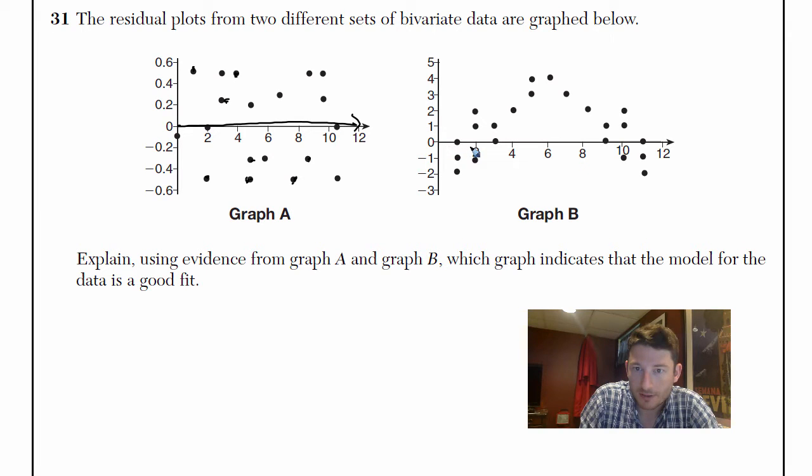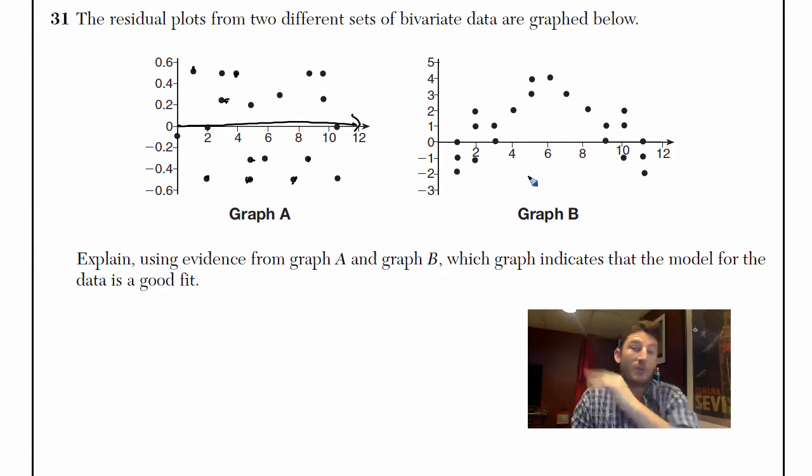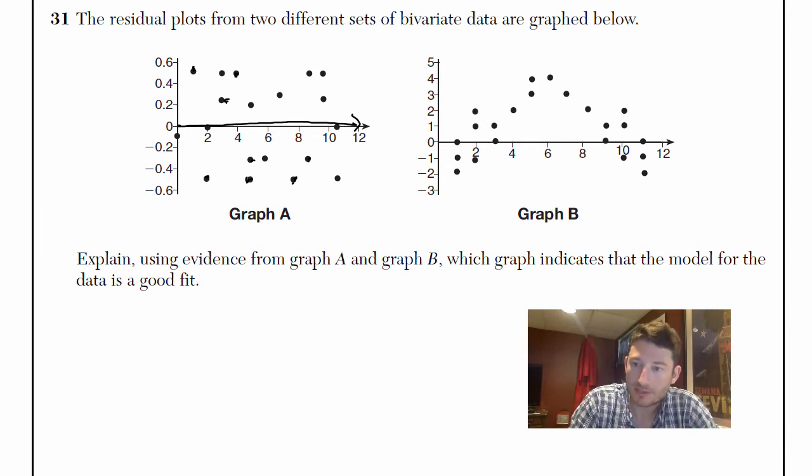In Graph B, it looks like as your values get bigger they go up and then to a certain point they start going down again. So there may be no real relationship. Usually you're hoping as the data goes up, as one variable goes up the other one goes up, or as one variable goes down the other one goes down.